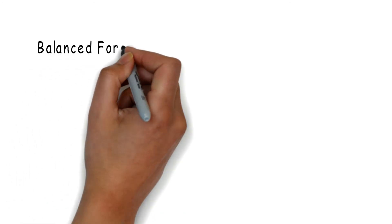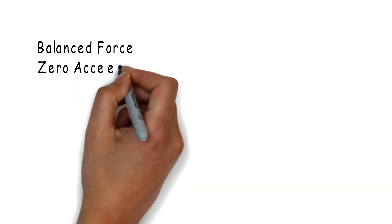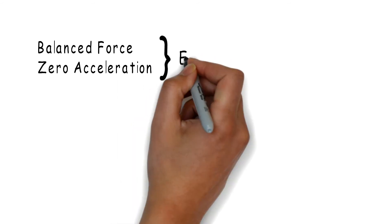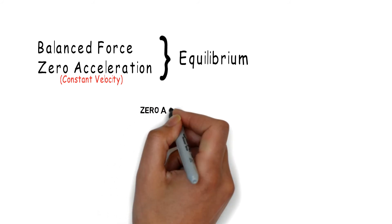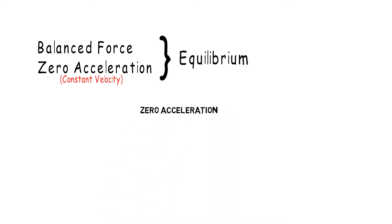So for a body to stay in equilibrium, either the net force should be zero or the body should not accelerate. But keep in mind that a body moving with a constant velocity which has zero acceleration is also known to be in a state of equilibrium.